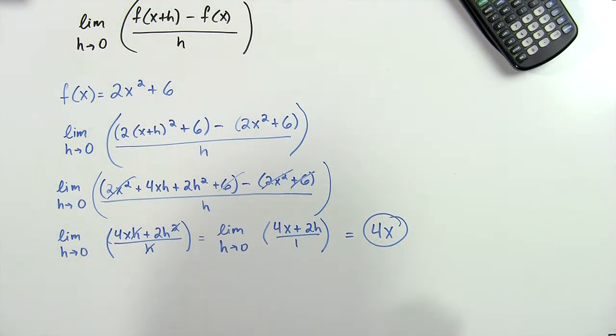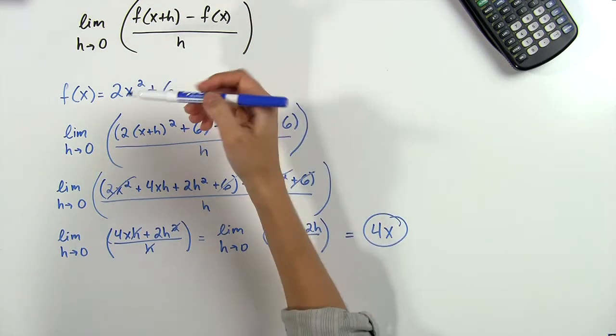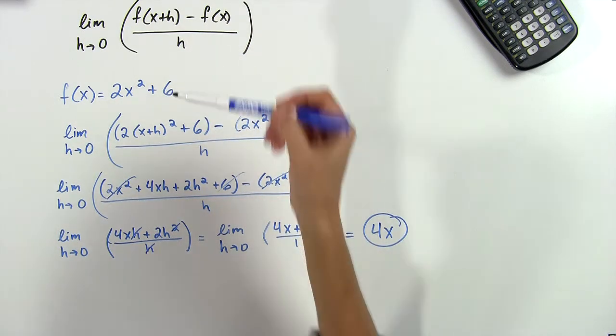And that's our limit. So 4x is the slope of our tangent line at any point x on this function. And that's how we find the slope of a tangent by taking the limit. Thanks for watching!